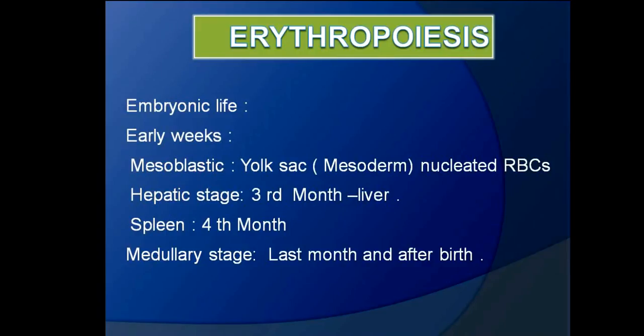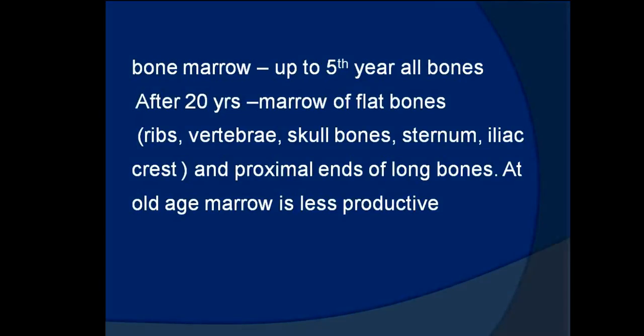From the fourth month, erythropoiesis starts from the spleen (splenic stage). In the last months and after birth, it is known as the medullary stage, where RBCs are formed from the bone marrow. In summary: mesoblastic, hepatic, splenic, and medullary stages occur in sequence.